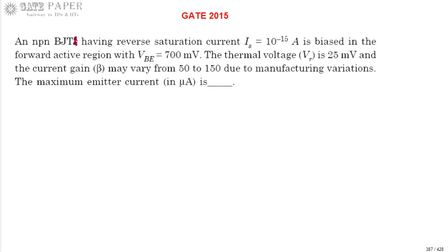That variation is taking place. We're going to calculate maximum emitter current IE. For an NPN BJT, this is the diagram: the arrow implies emitter, opposite is collector which is also n-type, and this side is the base which is p-type nature.